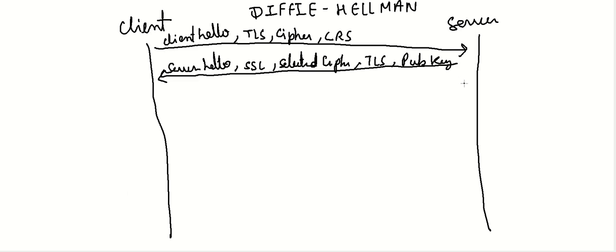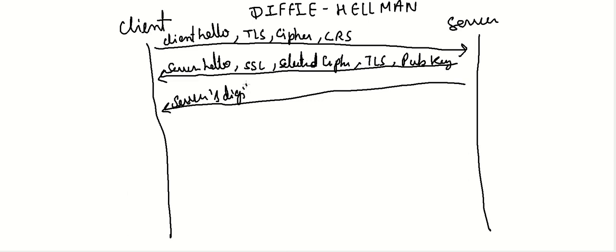In Diffie-Hellman, along with this there is one more response which includes the server's digital signature. This signature includes the client random secret, the server random secret, and a DH parameter G to the power S. So G^S is your DH parameter — Diffie-Hellman uses exponential calculation.